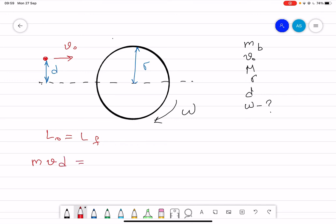After, what happens is that when the bullet strikes and embeds here, the radius is still R, and then it starts spinning.